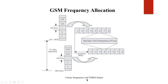Looking at the diagram, the uplink starts from 890 MHz and downlink from 935 MHz onwards. Both uplink and downlink have 125 channels, of which 124 are active and one is reserved. Each channel has a 200 kHz bandwidth, and there is a 45 MHz separation gap between uplink and downlink.